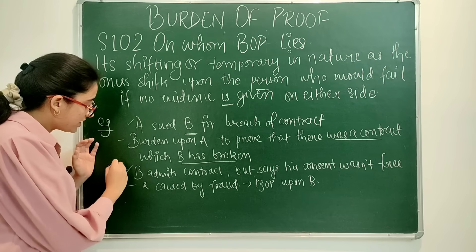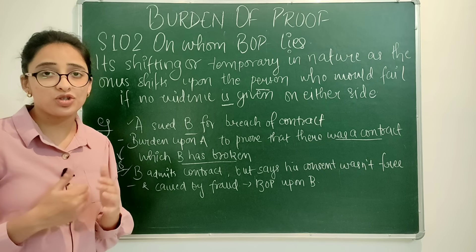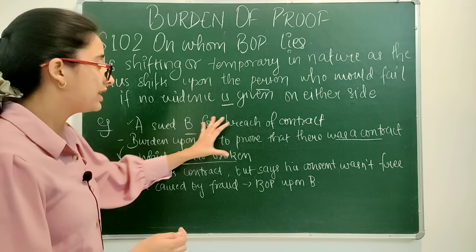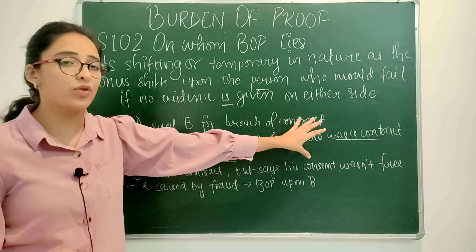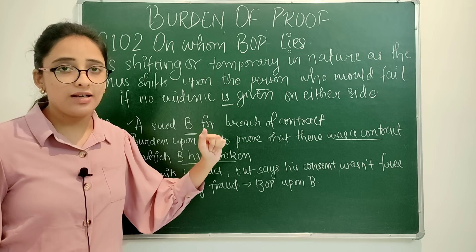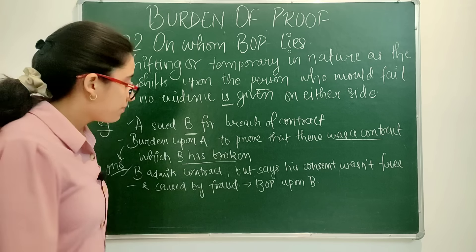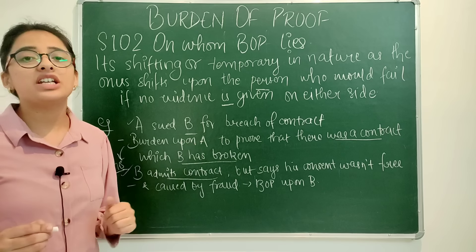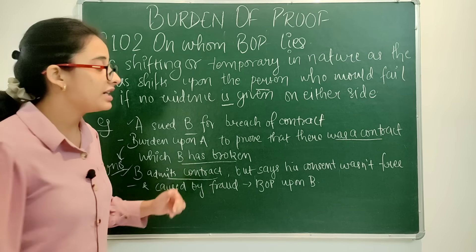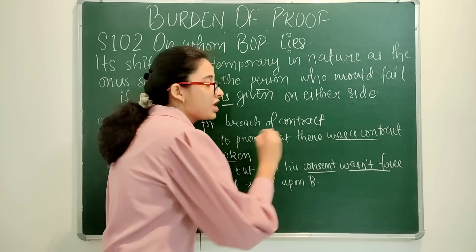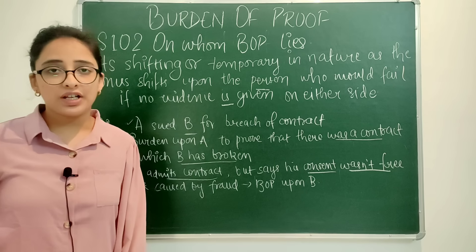Onus has now come upon B. B, in his turn when onus comes upon him, admitted that there was a contract between A and B. B admitted the contract but said that he did not breach it — B said his consent was not free.